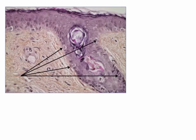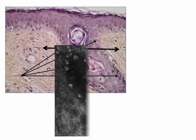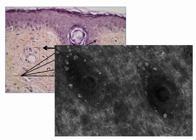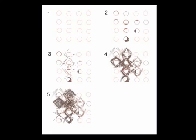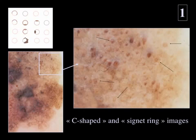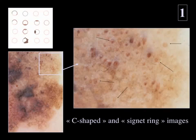This hair follicle invasion can also be seen by confocal microscopy. With horizontal sectioning, you can see that within the hair follicle we have bright cells that represent the melanocytes. In their paper, Schiffner and co-workers described the progressive invasion of the hair follicle.